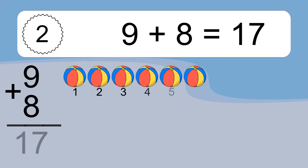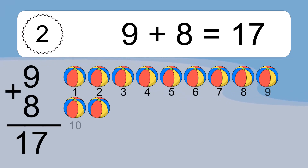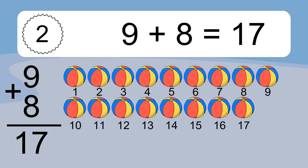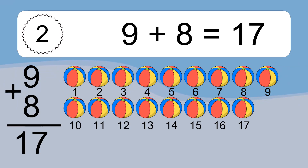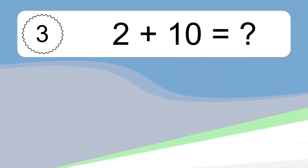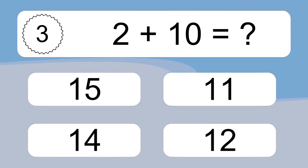9 plus 8 equals what? 9 plus 8 equals 17. Let's count it. 1, 2, 3, 4, 5, 6, 7, 8, 9, 10, 11, 12, 13, 14, 15, 16, 17.